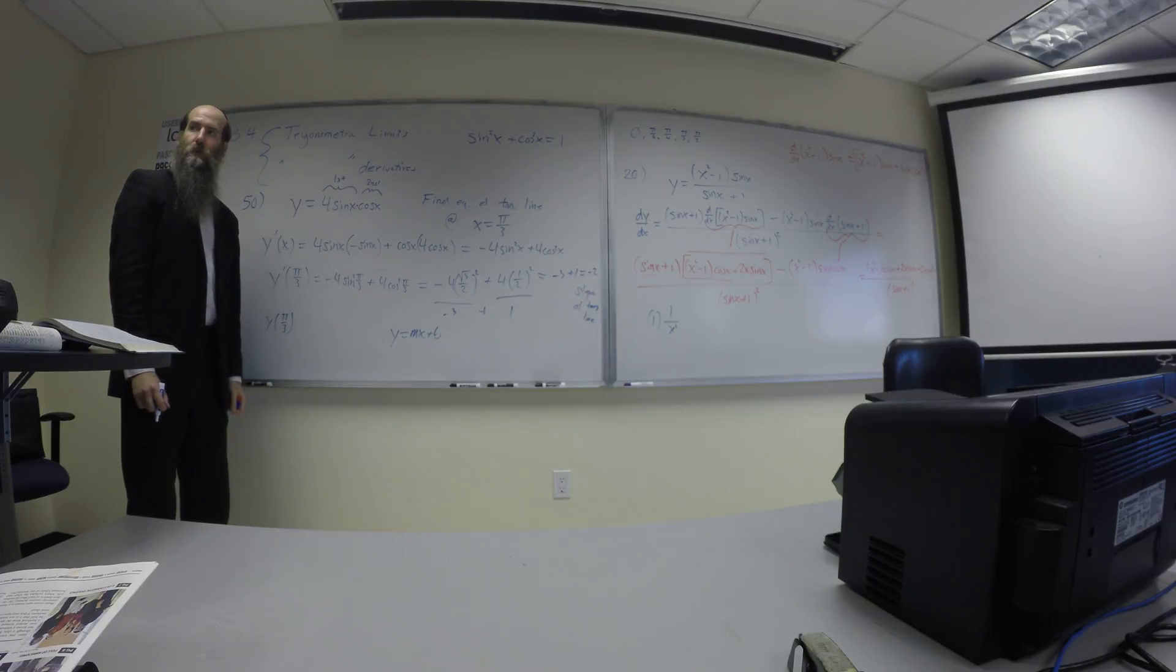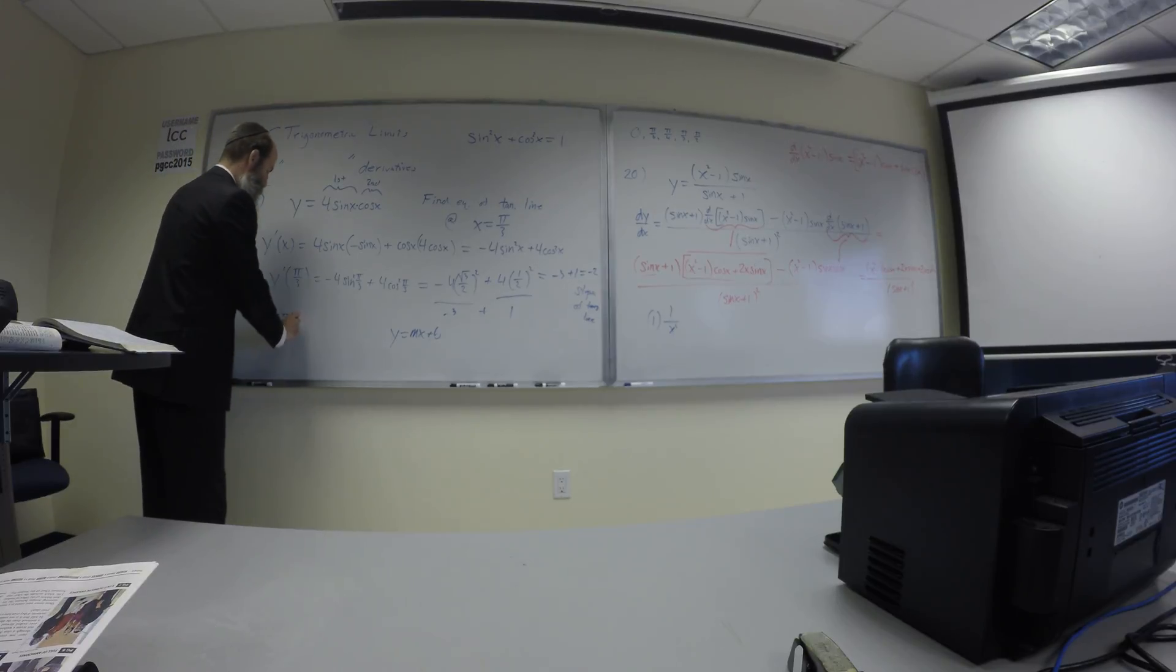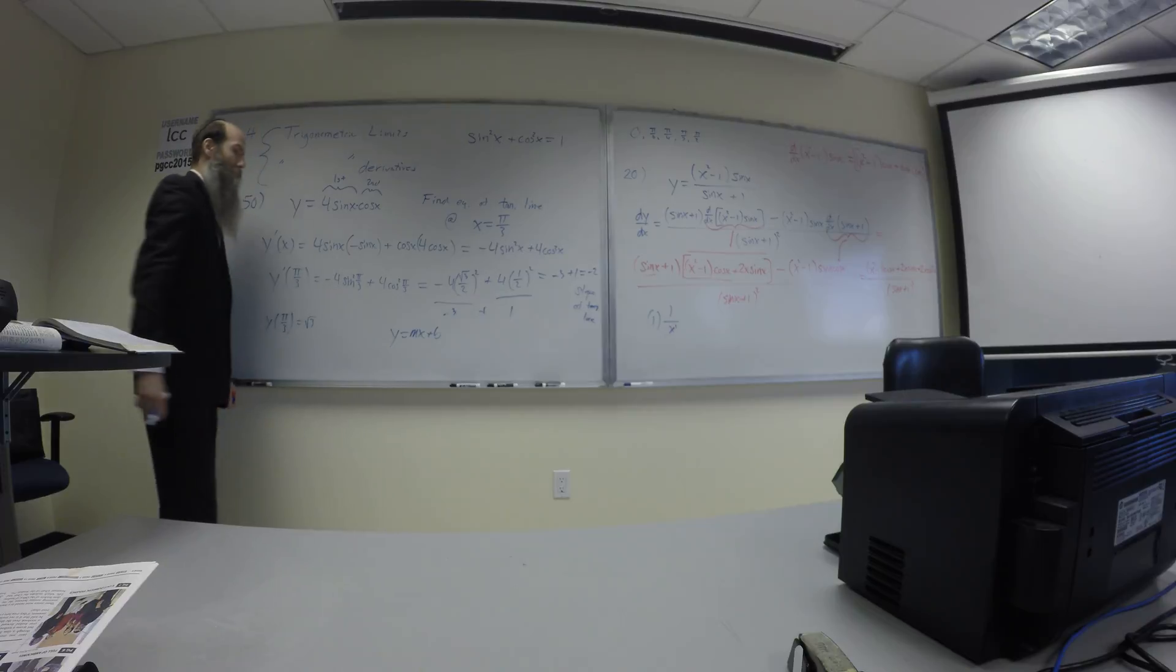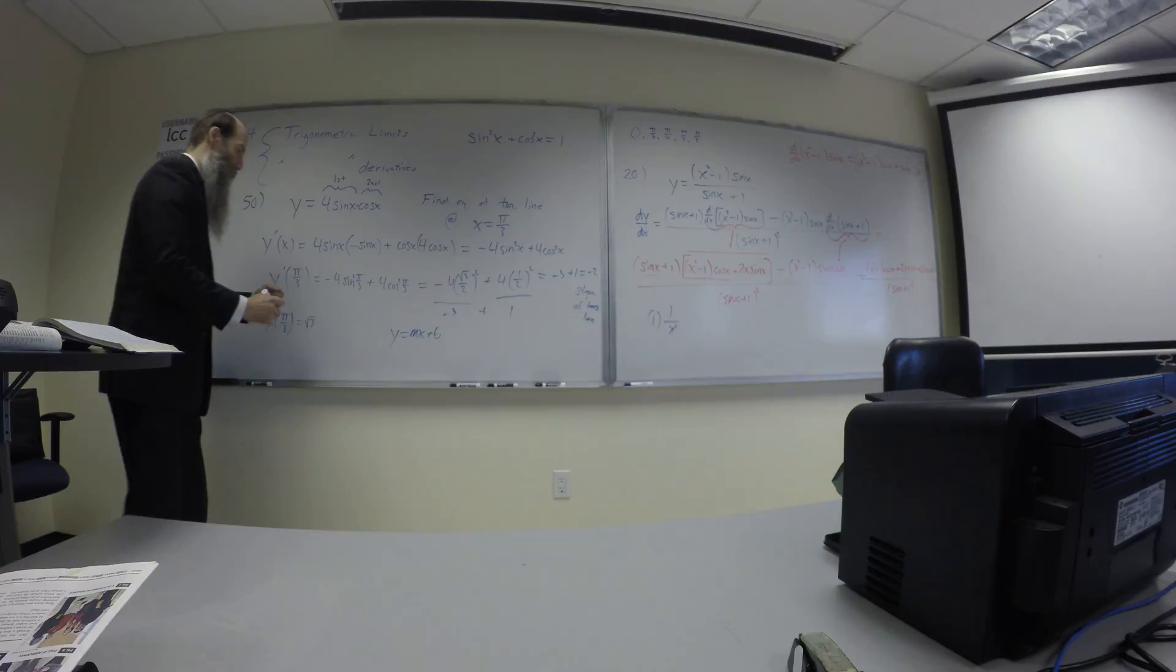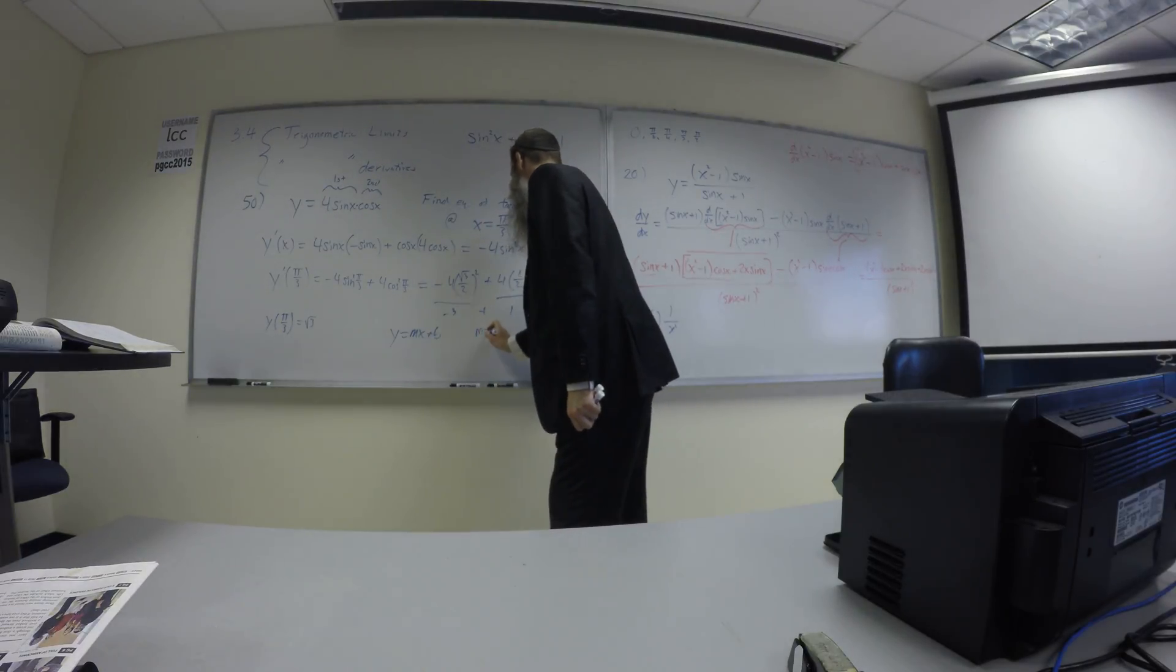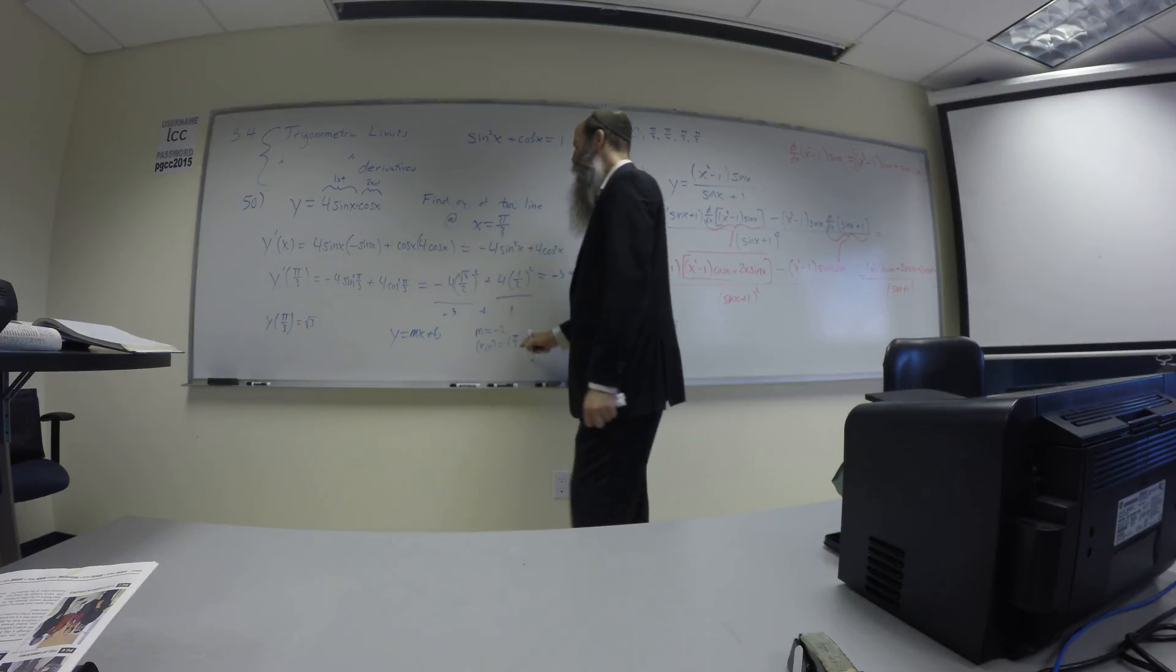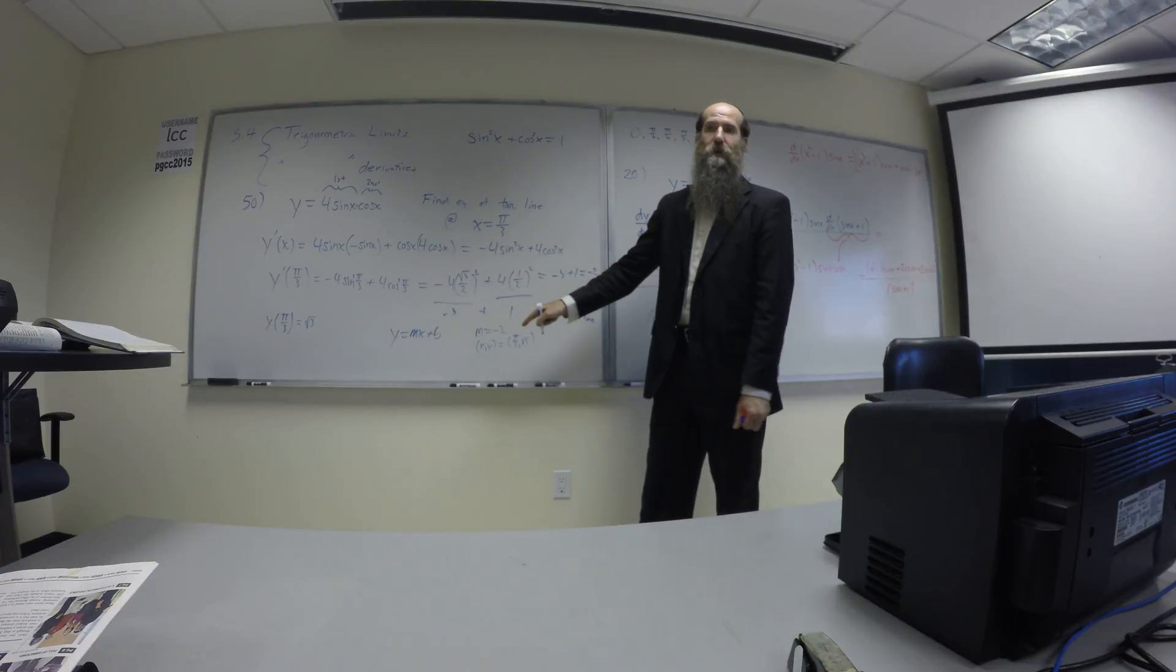So I now have 4 times root 3 on 2 times a half, which is root 3. Agreed? I now know that m is negative 2, and I know that I have an x-y pair that's on my tangent line called pi on 3 comma root 3. Now that I have a slope and a point, I'm going to plug them into here to find b, and I'll write out the equation of the tangent line.